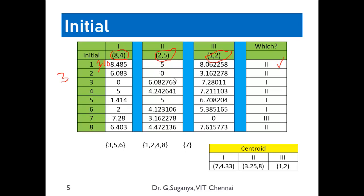Element 3 has distance 0 to the first leader, so it falls into the first cluster. Similarly, for element 8, the minimum distance is 4.4, so it is assigned to the second cluster. After processing all elements: cluster 1 contains points 3, 5, and 6; cluster 2 contains points 1, 2, 4, and 8; and cluster 3 has only one element, which is point 7. These are the clusters formed at the end of epoch 1.